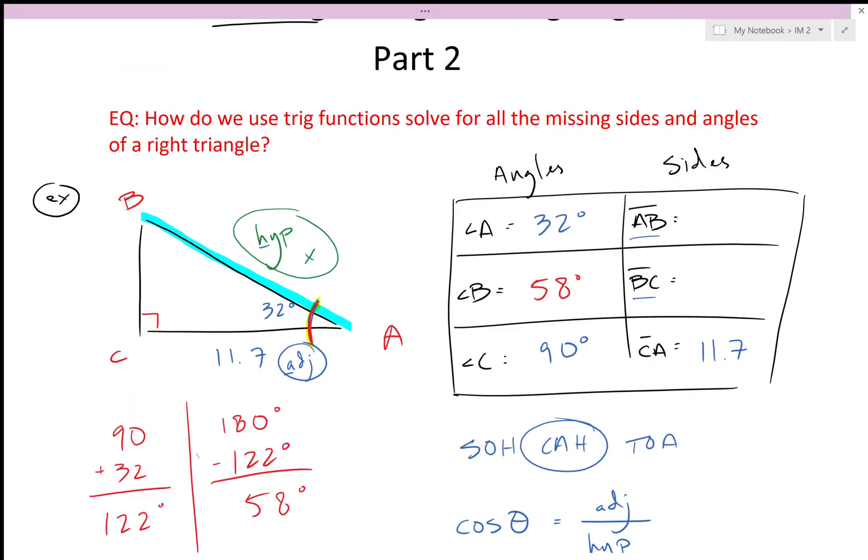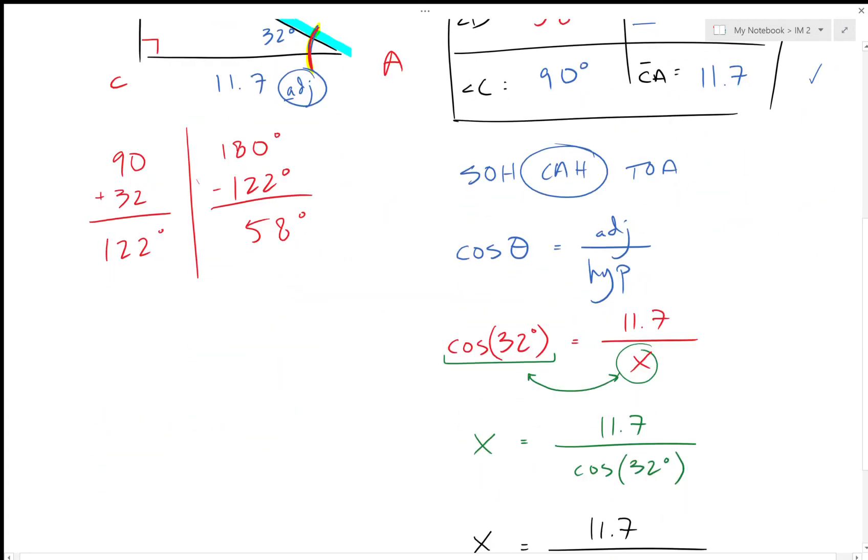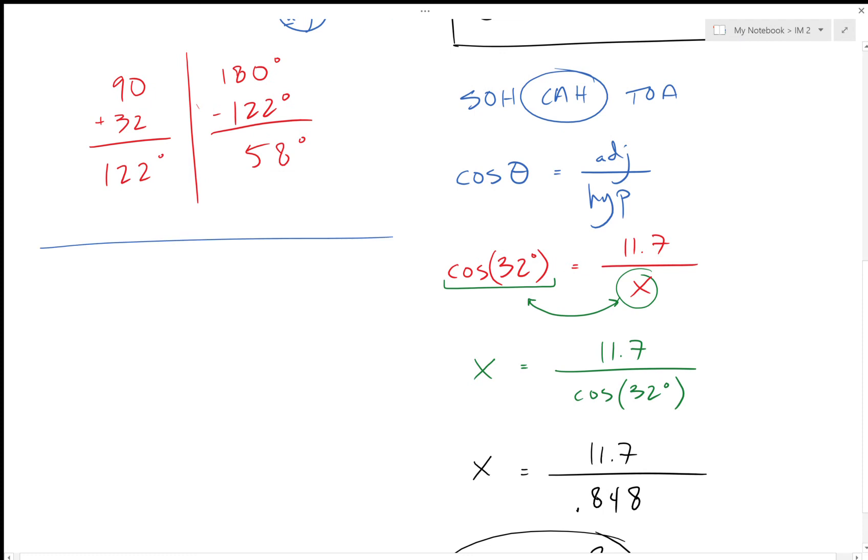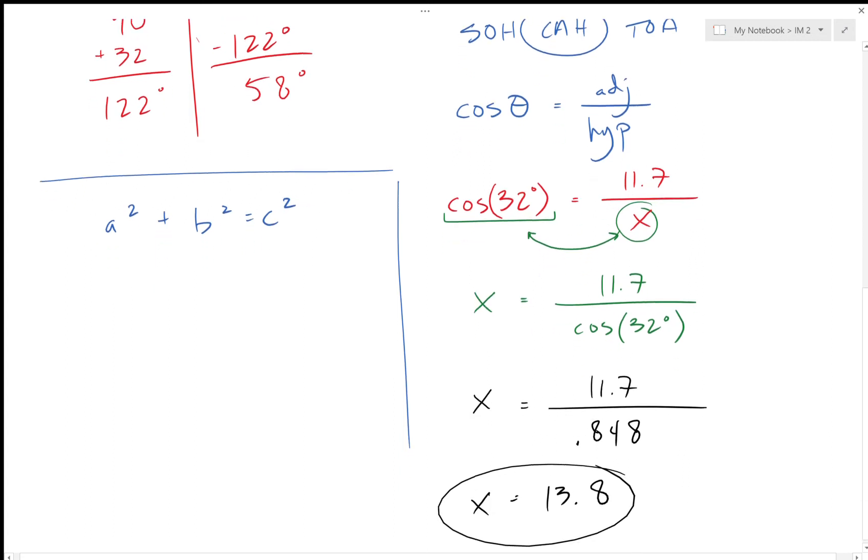Alright, so 13.8 was the missing side that we were finding right here AB, so 13.8. Now if I wanted to, I could use trig again to find out what BC is. I'll have to change some of the names of my sides, but the other thing that we know is that if I know two sides of a right triangle, I can find out the third using Pythagorean's Theorem. Remember, Pythagorean's Theorem is a squared plus b squared equals c squared, so I'm just using all the methods that we've learned so far.